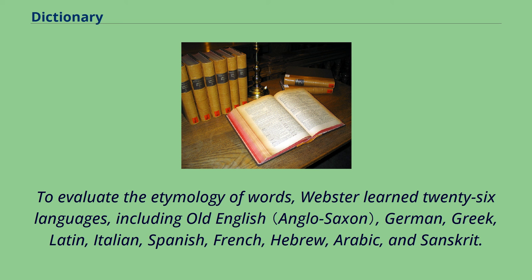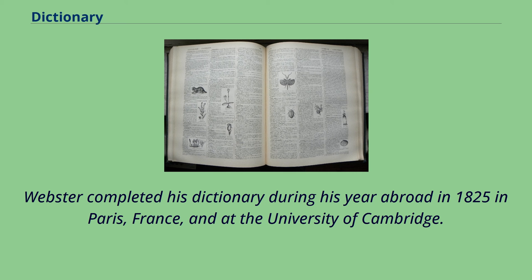Webster learned 26 languages, including Old English, German, Greek, Latin, Italian, Spanish, French, Hebrew, Arabic, and Sanskrit. Webster completed his dictionary during his year abroad in 1825 in Paris, France, and at the University of Cambridge.